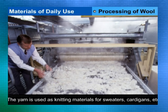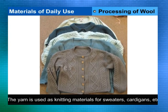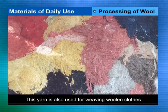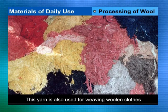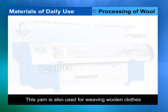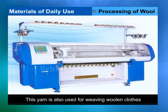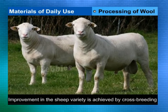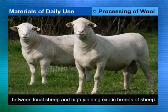The fibers thus obtained are washed, twisted, and spun into yarn. The yarn is then used as knitting material for sweaters, cardigans, etc., and is also used for weaving woolen clothes. Breeding of sheep: improvement in sheep variety is achieved by cross-breeding between local sheep and high-yielding exotic breeds.